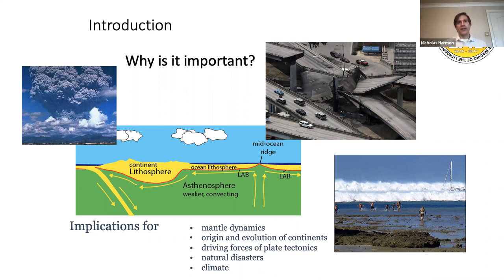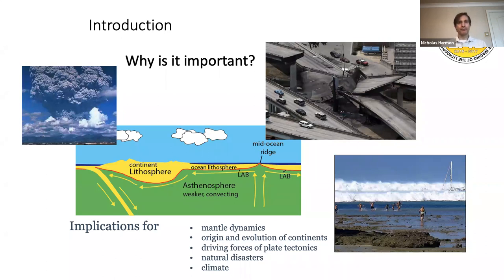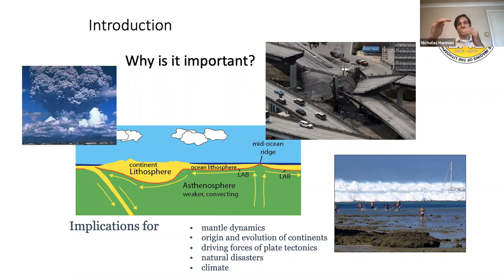This has implications for mantle dynamics — how does convection and conductive cooling work in the mantle — but also going further back in time, understanding how oceanic lithosphere evolves is important for understanding the origin and evolution of continents. We're also interested in understanding the driving forces of plate tectonics and knock-on effects such as earthquakes, volcanoes, and tsunamis. And if we want to understand changes in climate on geological timescales, we have to understand what the oceanic lithosphere is doing relative to continental lithosphere, including how deep ocean basins are through time.